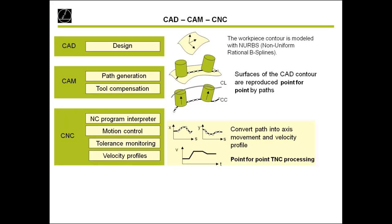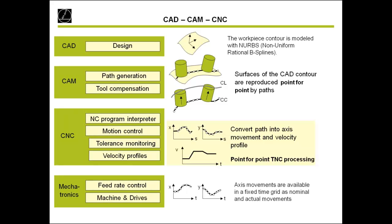Heidenhain is responsible for the program interpreter, the motion control, tolerance, and also monitoring the axes — how fast we bring the axes up to speed. This all belongs to the CNC control. Of course, with only the CNC control we cannot mill anything. We also need the mechanics — the feed rates, the machine drives — and we need to compensate tolerances from the mechanical machine. With all these topics together, we want to achieve the best surface quality on the milling machine.